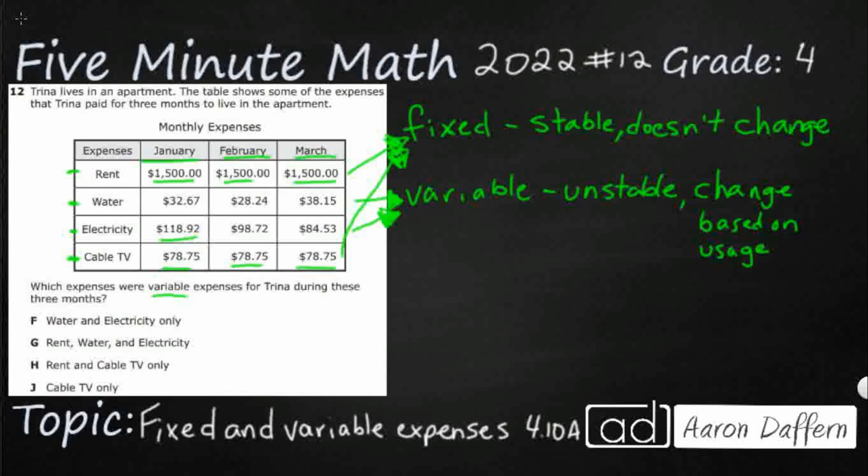So you notice in our list here we would just have two bills that are variable. That means they change based on how much we use the water or use the electricity. It's these two right here. So our answer is F.